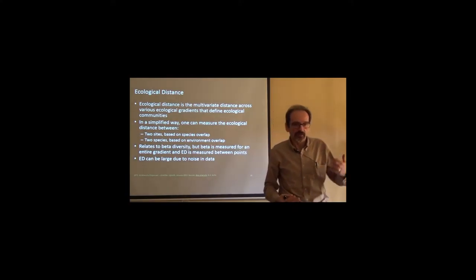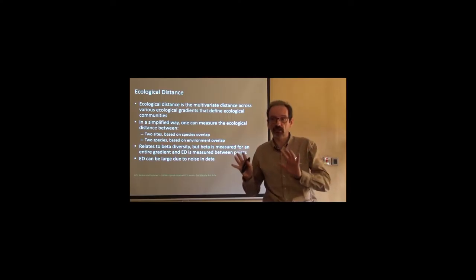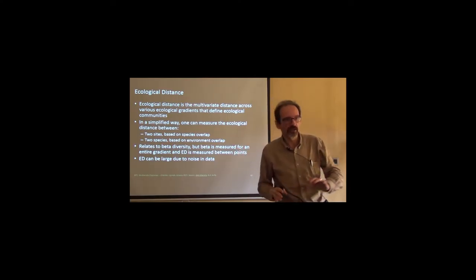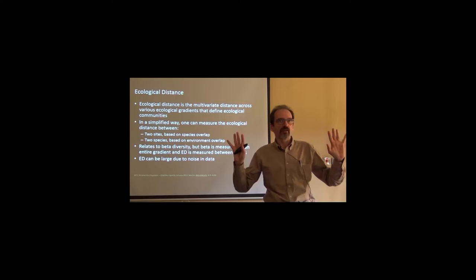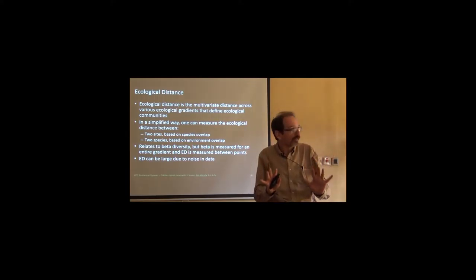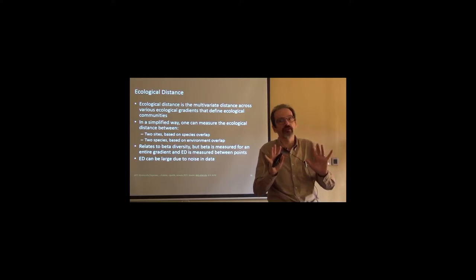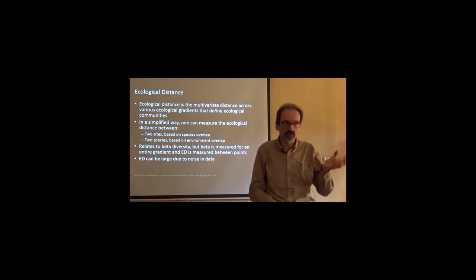We can measure the ecological distance between two sites or two species. Basically, the ecological distance between two sites is looking at how many species they share. Because if they share species, they also share ecological characteristics. If I have a given set of species in habitat A and the same set of species in habitat B, what is the ecological distance? It's small. Because, basically, if they share the same species, they are sharing the same environmental or the same ecological characteristics. So, it's highly related to environmental distance, but it's not the same thing.